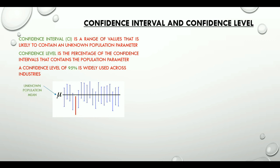Vertical blue lines are the confidence intervals that contain the value of the population mean. And the red line, which is also a confidence interval, is below the black line and hence does not contain the population mean value. So here, 19 out of 20 samples from the same population has confidence intervals that contain the population parameter. This is called 95% confidence level.